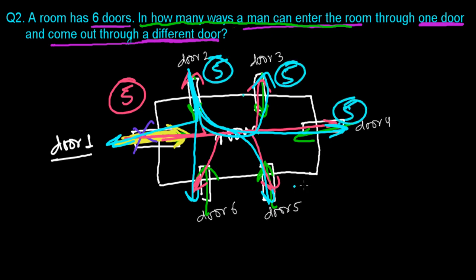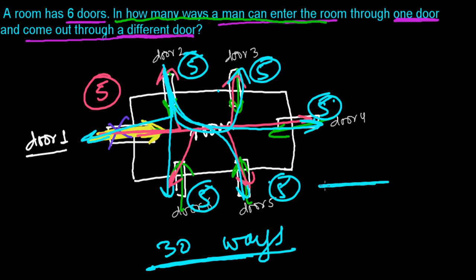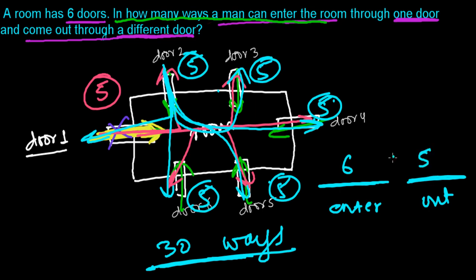So for each of the six entry doors, there are five exit options: five, five, five, five, five, five — that gives 30 total ways. You can also think of it simply: there are two positions — entering and going out. He can enter in 6 ways and go out in 5 ways. Multiply 6 and 5, and you get 30 ways.